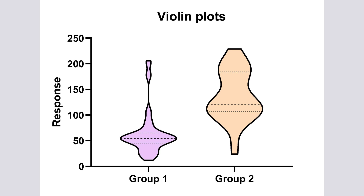As violin plots are meant to show the empirical distribution of the data, PRISM, like most programs, does not extend the distribution above the highest data value or below the smallest. In some programs violin plots extend out to a point, so as you will see within PRISM, violin plots usually seem cut off or flat at the top and bottom.